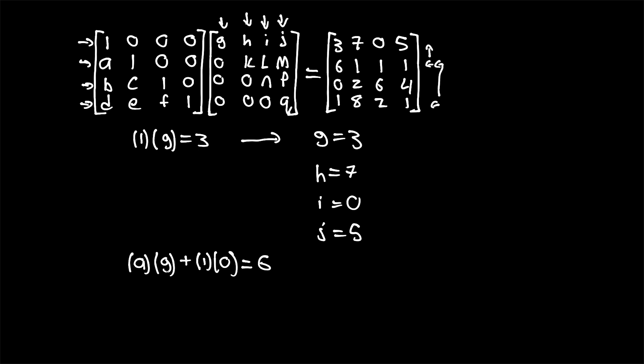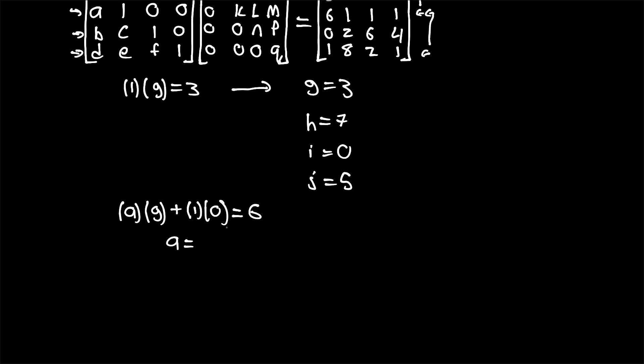And therefore, to solve for the unknown A, it's going to be 6 divided by G. Our G is 3, so therefore, A equals 2.